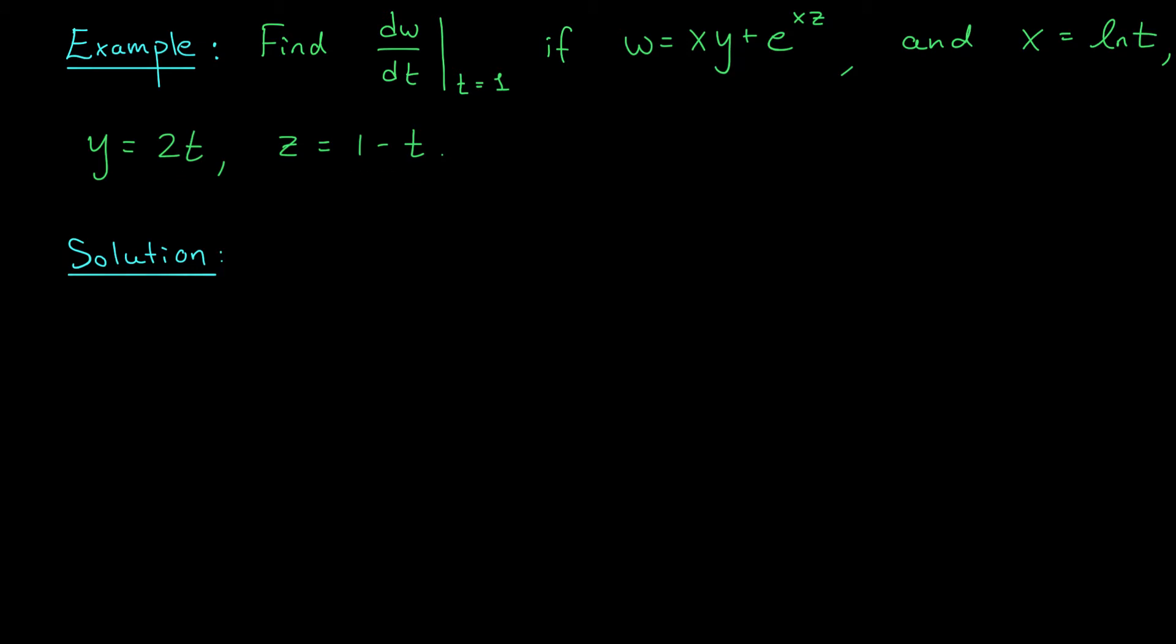Now I know what you're thinking. Whoa, we have three variables now, right? x, y, and z and each of those are functions of t. You know, you didn't tell us a chain rule for three variables. Well, no, I didn't. But it turns out the same chain rule for paths will extend to however many variables you want.